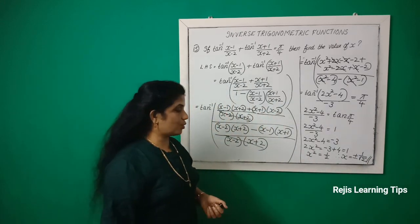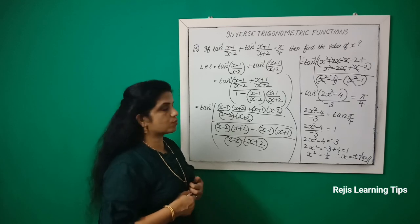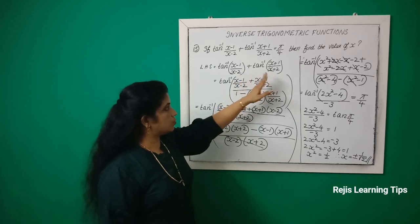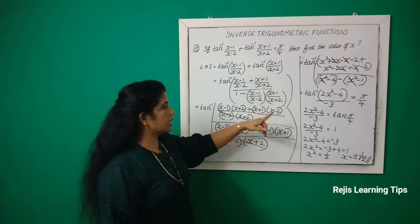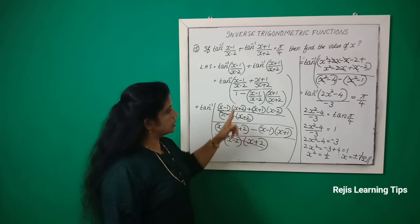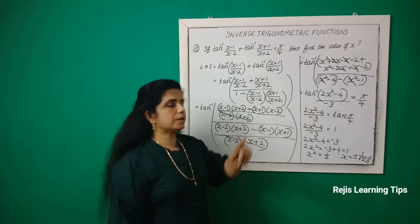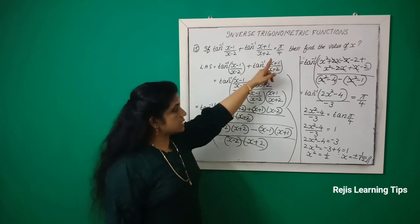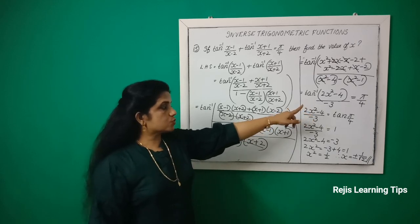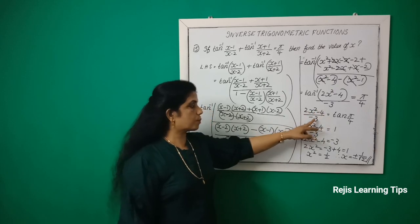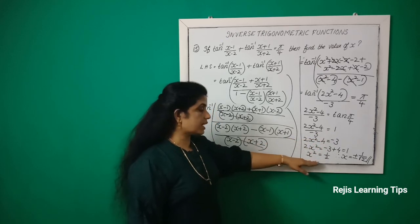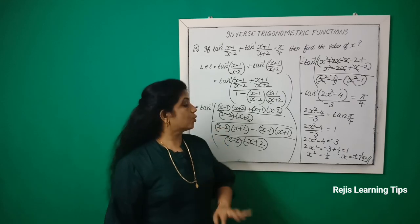So x² = 1/2 and x = ±1/√2. To recap: using the formula tan⁻¹x + tan⁻¹y = tan⁻¹((x+y)/(1−xy)), we combined the terms, simplified to tan⁻¹((2x²−4)/(−3)) = π/4, and solved to get x = ±1/√2.